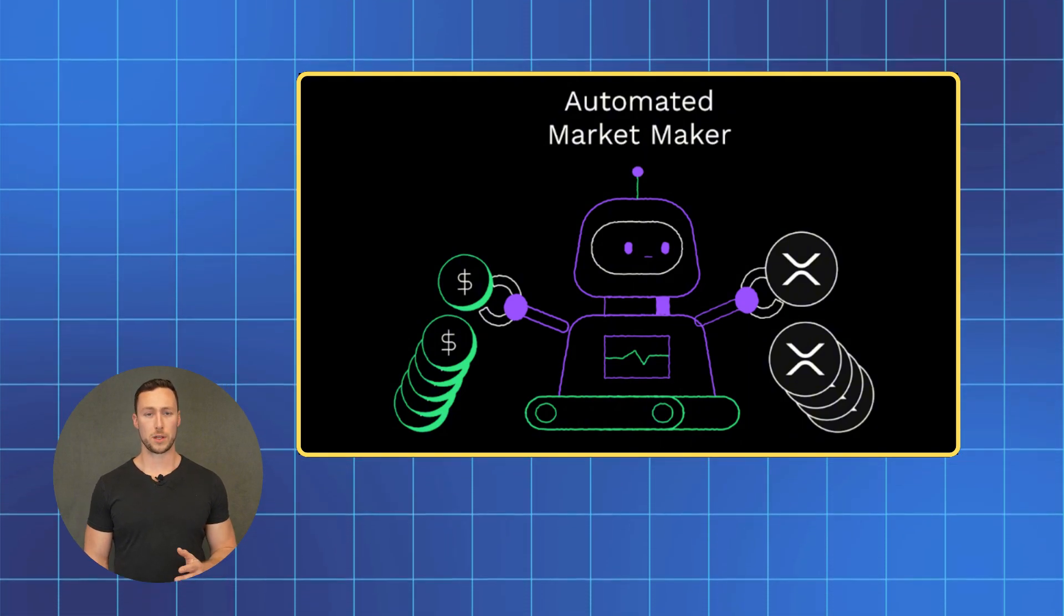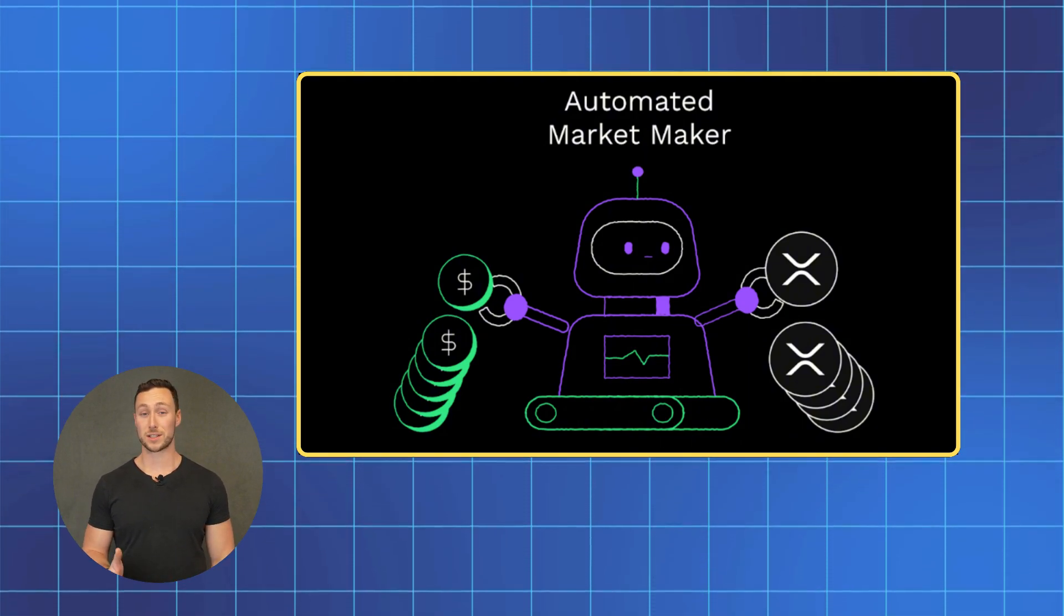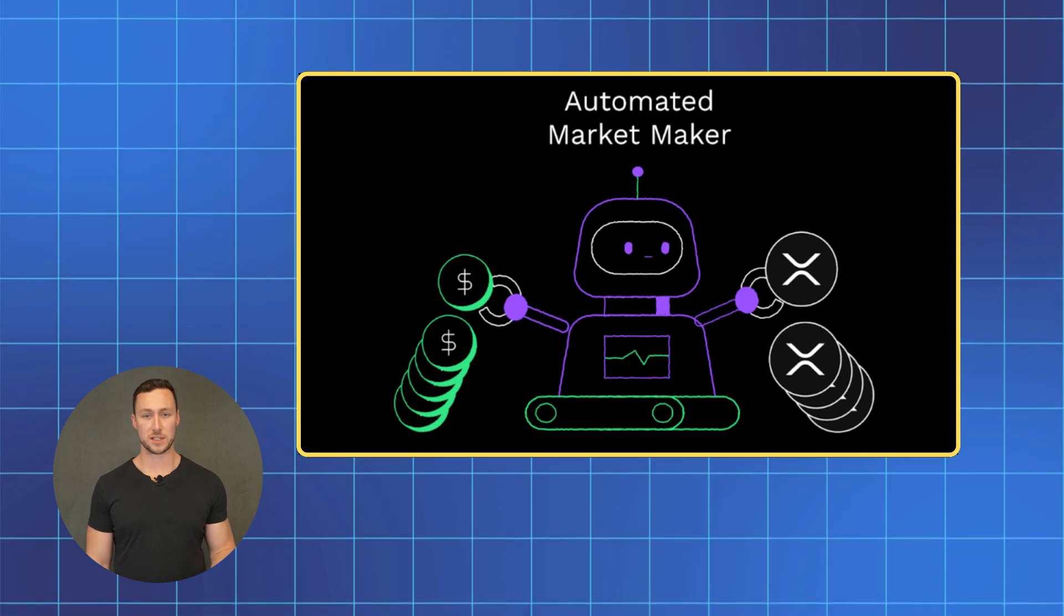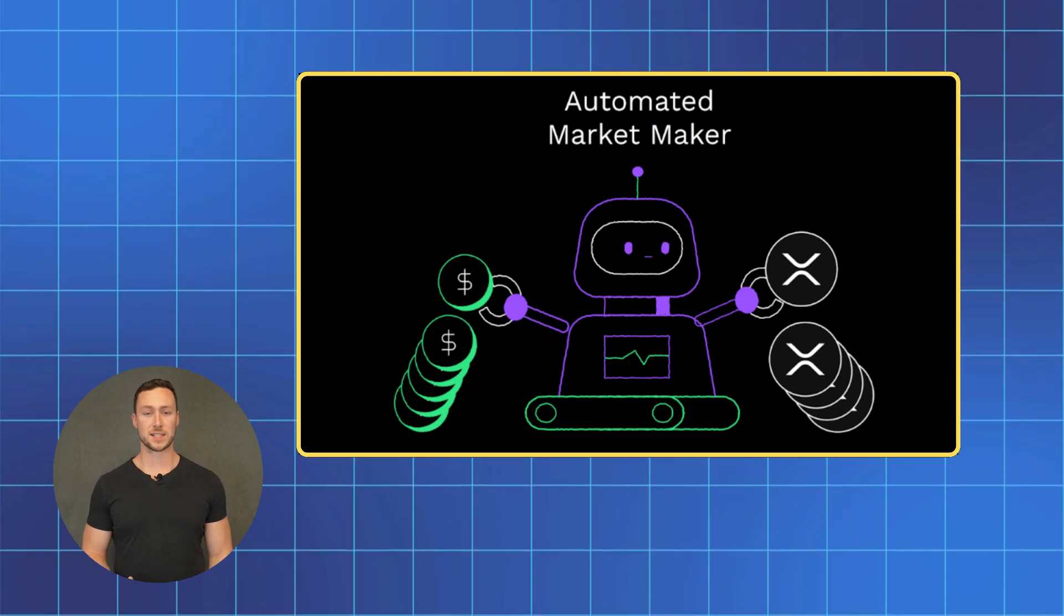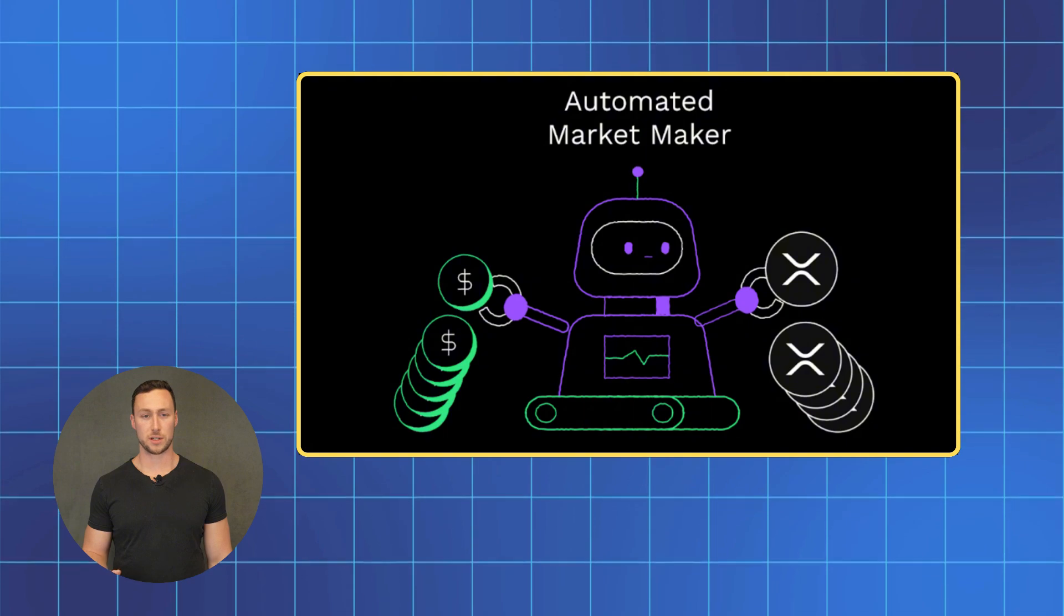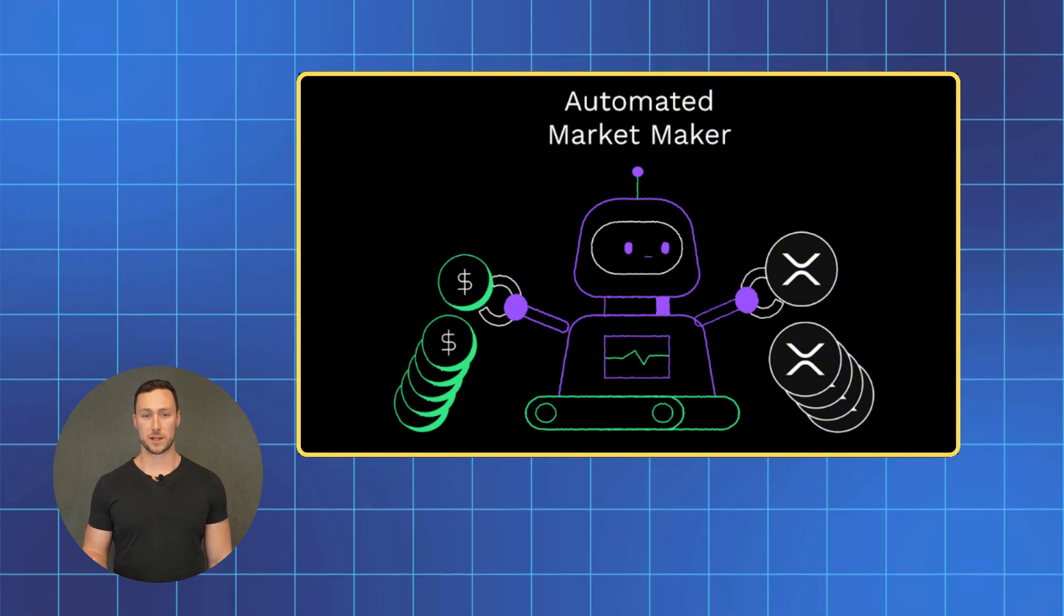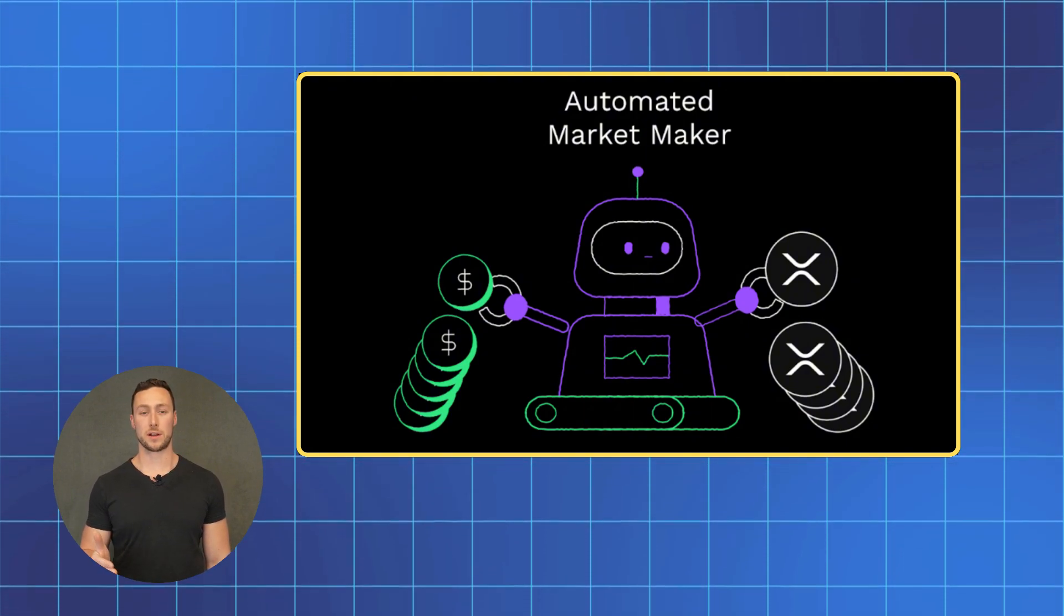When you want to trade one token for another, you're not dealing with another person. You're interacting directly with this vending machine. You put tokens in and get tokens out. Except in crypto, these automated vending machines aren't physical machines. They're smart contracts that exist on a blockchain like Ethereum or Solana.